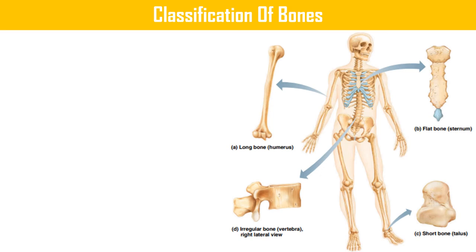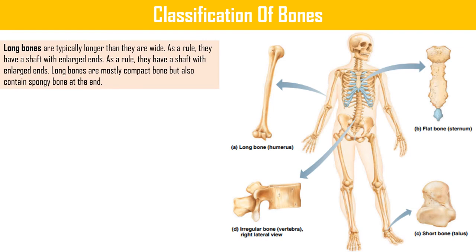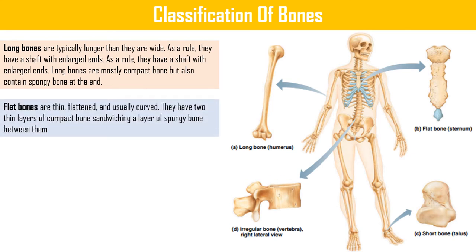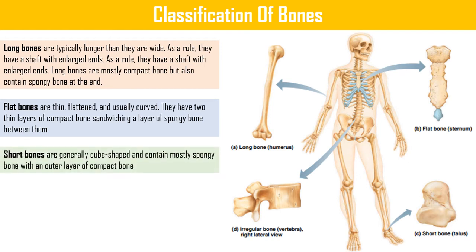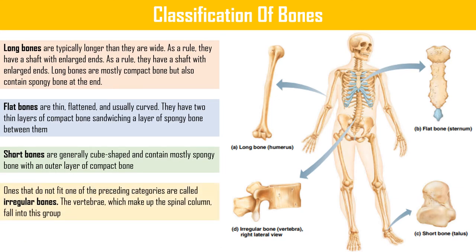There are four types of bones in the human body: long bone, flat bone, irregular bone, and short bones. Long bones are typically longer than they are wide and have a shaft with enlarged ends; they are mostly compact bone but also contain spongy bone at the ends. Flat bones are thin, flattened, and usually curved with two thin layers of compact bone sandwiching spongy bone. Short bones are generally cube-shaped and contain mostly spongy bone with an outer layer of compact bone.